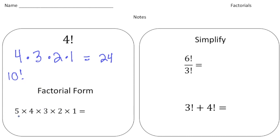So let's say, for example, we have 5 times 4 times 3 times 2 times 1, and I want to write it in factorial form. Well, all it is is just 5 and then the exclamation point.